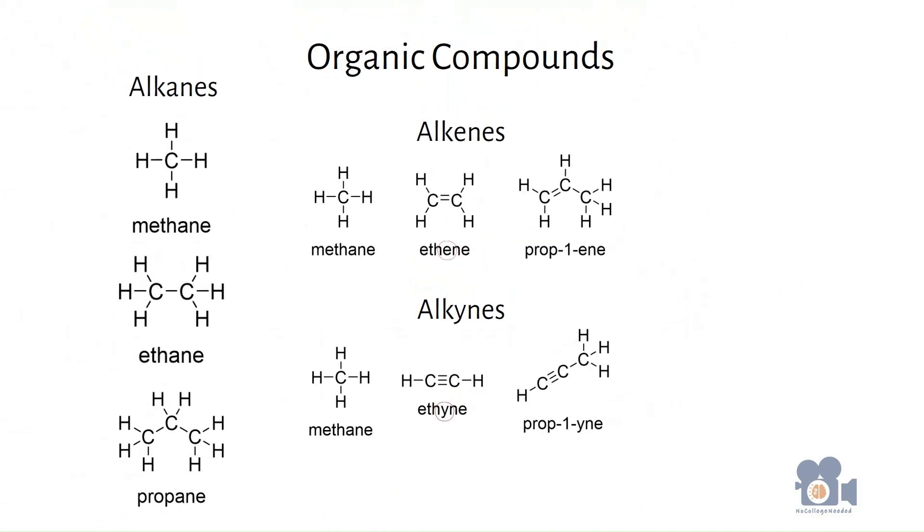Fortunately, these changes are alphabetical when going from one to three bonds, and that is a great way of remembering them, A to E to Y. As a classification system, these alkanes, alkenes, and alkynes are different functional groups and thus have different properties from one another.